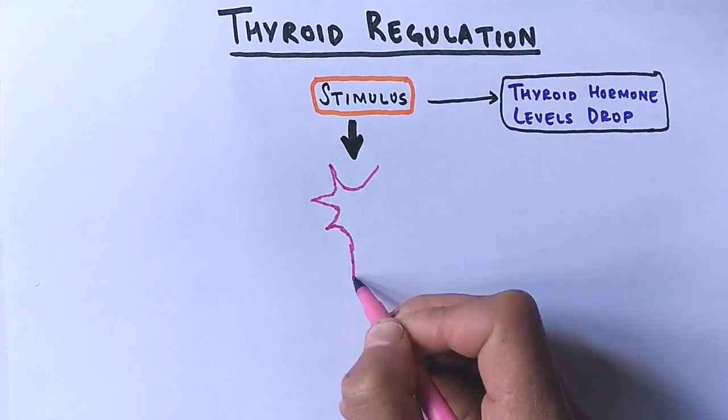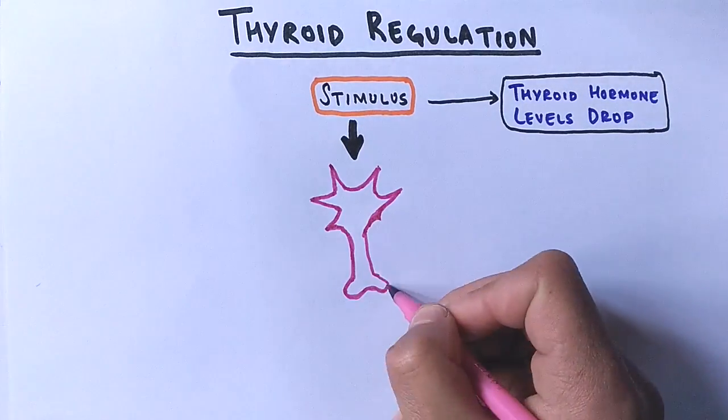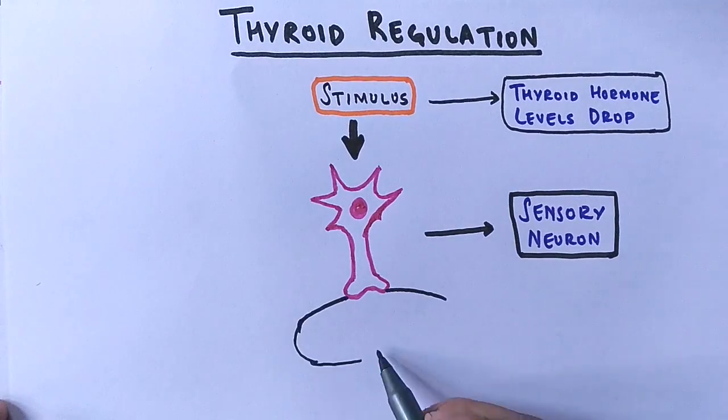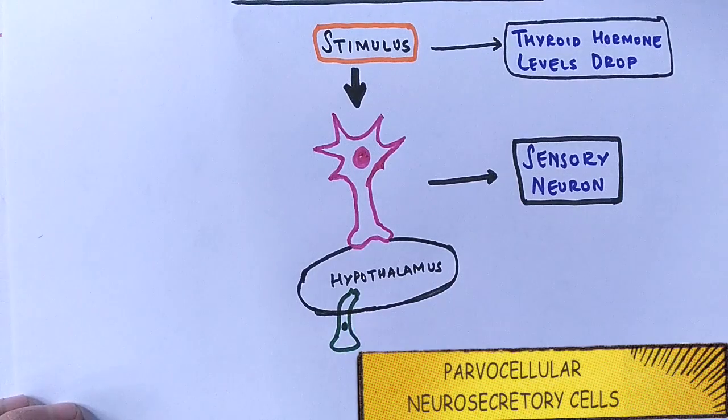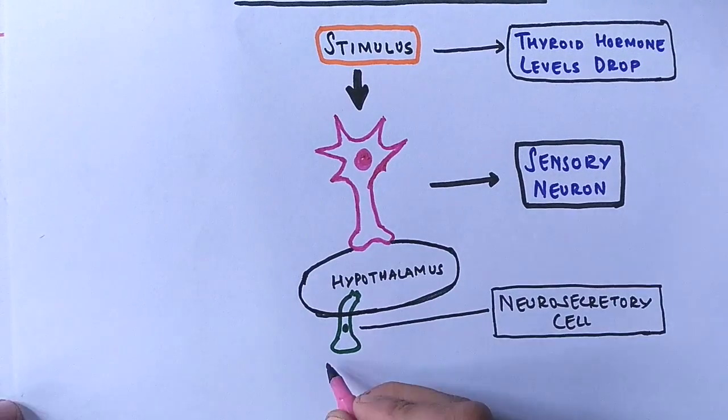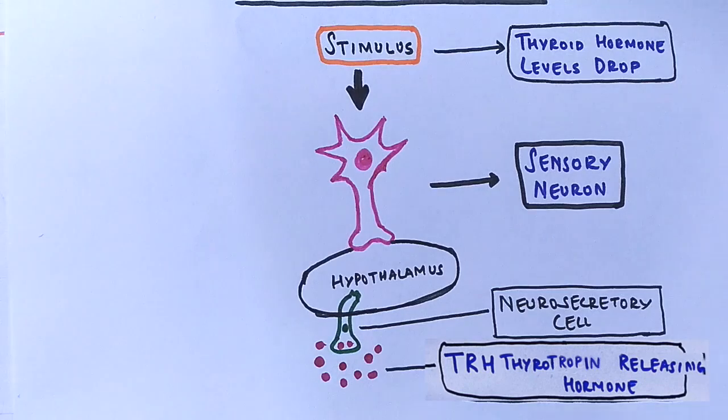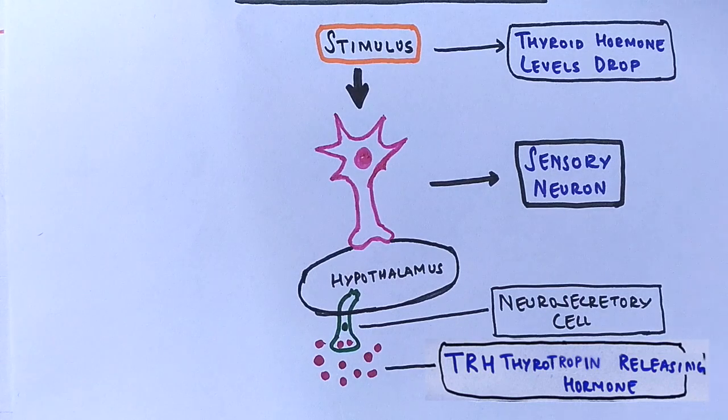This signal is transmitted to the hypothalamus via sensory neuron. The sensory neuron takes the signal to the paraventricular nucleus of the hypothalamus where parvocelular neurosecretory cells secrete thyrotropin releasing factor, that's TRH, sometimes also called thyrotropic releasing hormone.